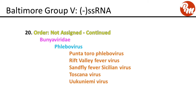Continuing in family Bunyaviridae, genus phlebovirus includes Punta Toro phlebovirus, Rift Valley fever virus, sandfly fever Sicilian virus, Toscana virus, and Uukuniemi virus.